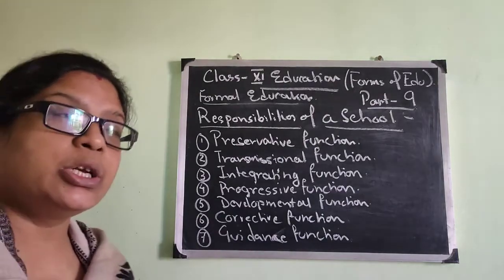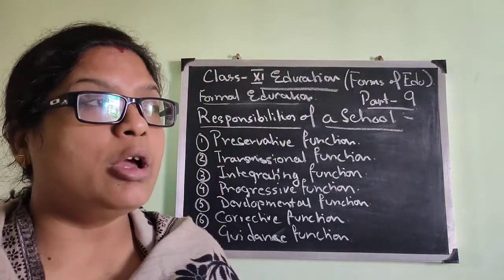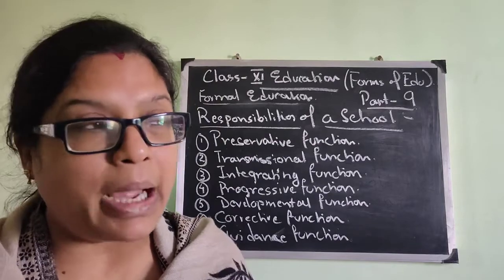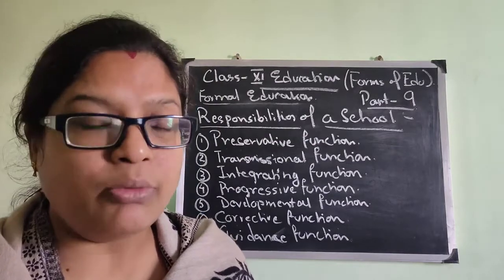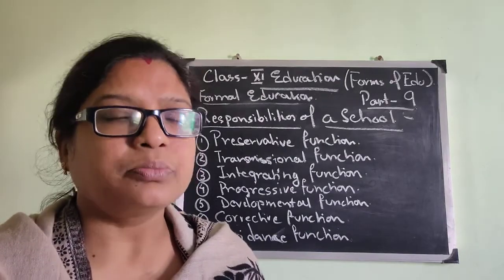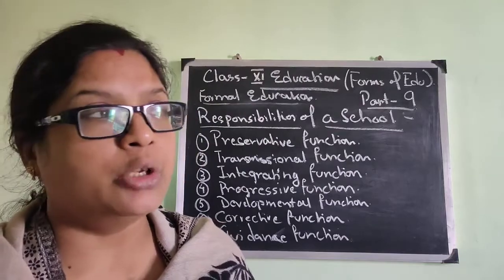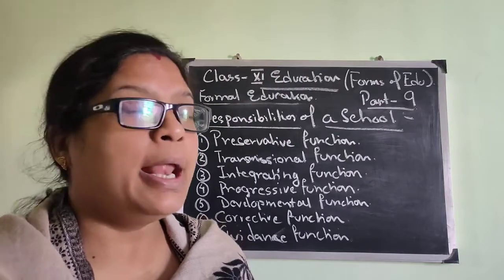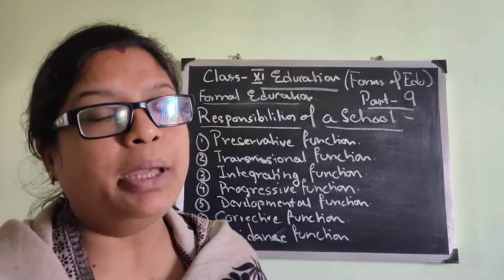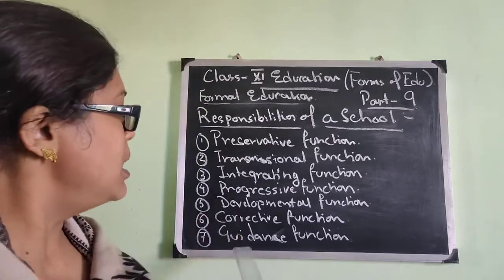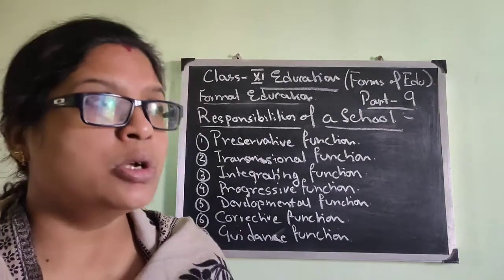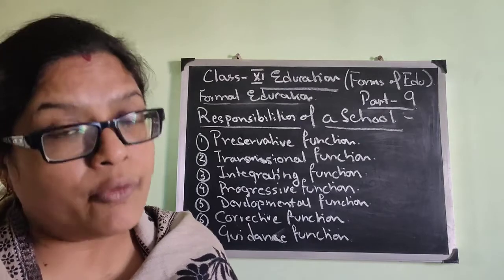Next is the Guidance Function. Guidance and correctional functions are more or less related. The school guides you right from the beginning to the end — not only through giving education and knowledge, but also in your personal life. When you feel a problem, any type of social or financial problem, the school cooperates with you so that your life can run smoothly. These are the moral responsibilities of a school as a formal institution.